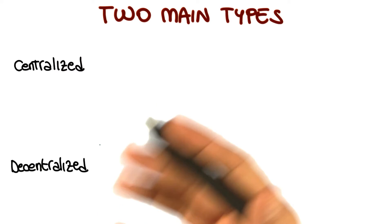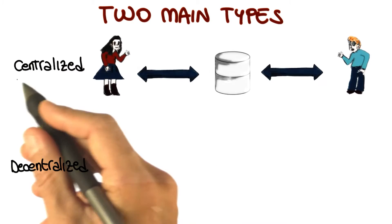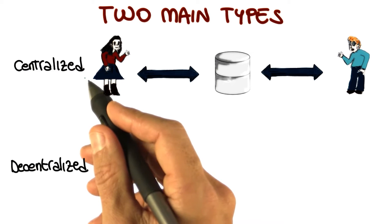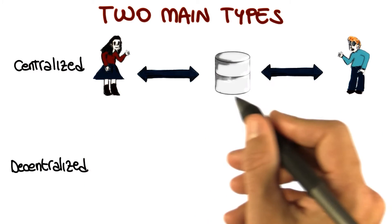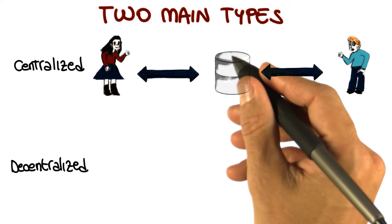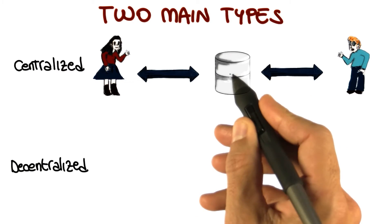So what is the difference between these two? Let's use again our friends Janet and Brad. In the case of a centralized version control system, there is a single centralized, as the name says, repository on which they're committing their files.